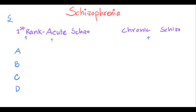We remember them by the mnemonic A B C D. A is for auditory hallucination — the patient will hear that someone is talking to them, but there is no one actually. That is their hallucination.